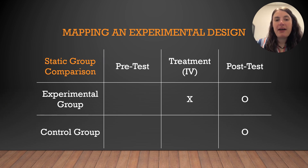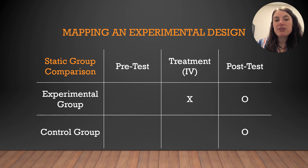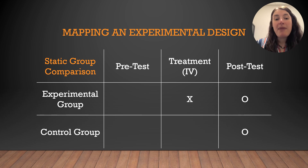Here's the static group comparison model. Now we've taken away random assignment and we've removed the pretest, so we're left with only the treatment and two post-tests. Like the two-group post-test only design in the true experiments lecture, this type of design does not allow for before and after comparisons. But unlike the true experiment version, we also have non-randomly assigned groups that may or may not be similar to one another, making the post-test comparison between the two more difficult.